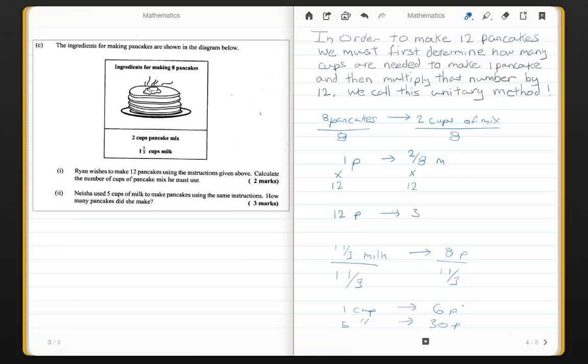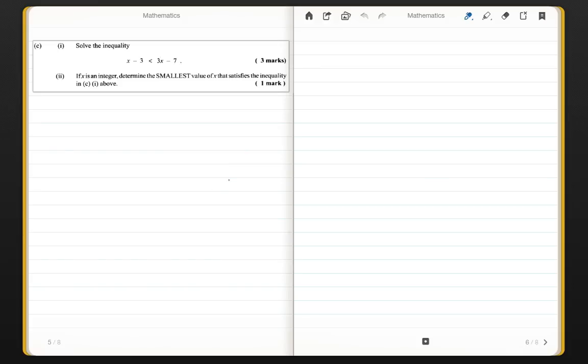Moving on to the next question now. We are asked to solve the inequality x minus 3 is less than 3x minus 7. So, let's set up our inequality over here: x minus 3 less than 3x minus 7. I am going to carry all of the numbers to one side and keep all the x's on the other side. I am going to move the numbers to the left. So, I am going to bring this 7 on this side, and I am going to transpose the x to the other side.